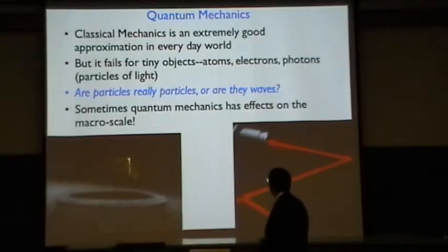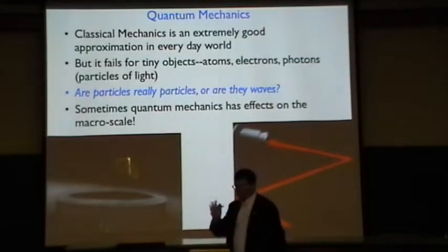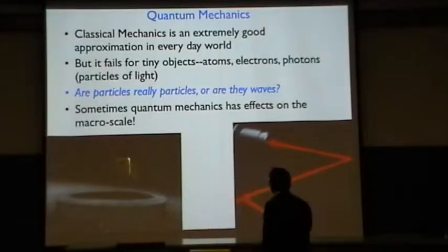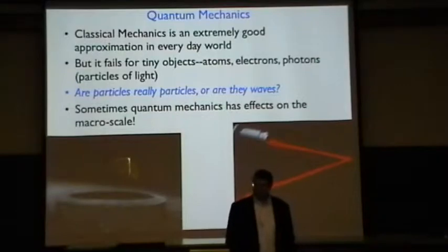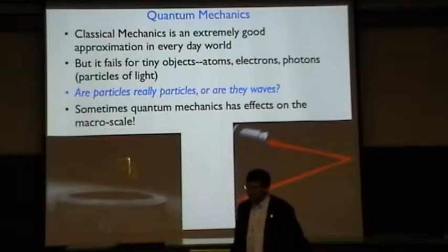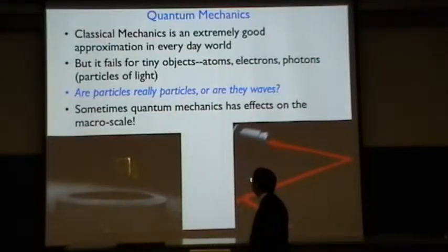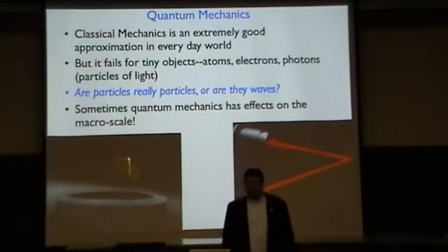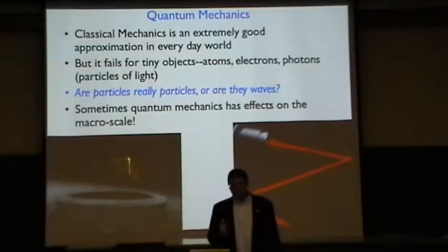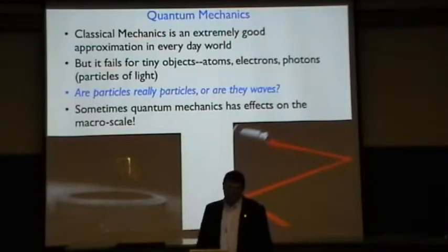Let me now turn to quantum mechanics. I'll leave you with that puzzle and talk about quantum mechanics. This came along around the early 1900s and was pretty much figured out by the late 20s. Classical mechanics, Newton, is an extremely good approximation for the everyday world, but it fails for very tiny objects, objects on the scale of atoms, like electrons and photons, which are particles.